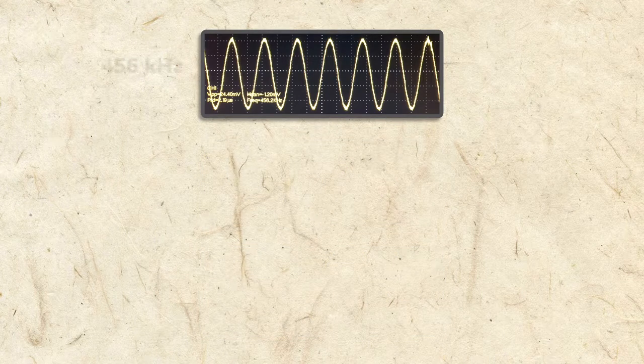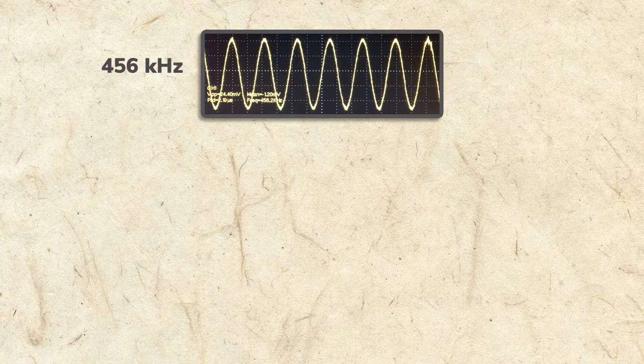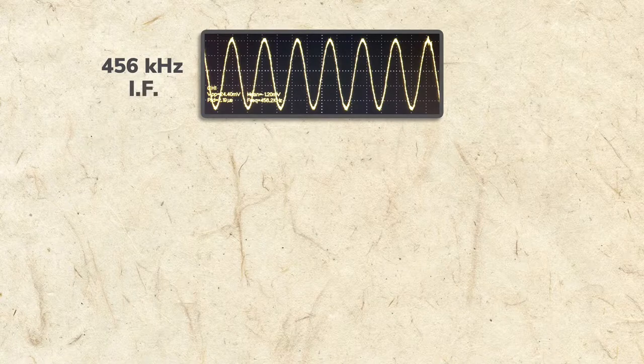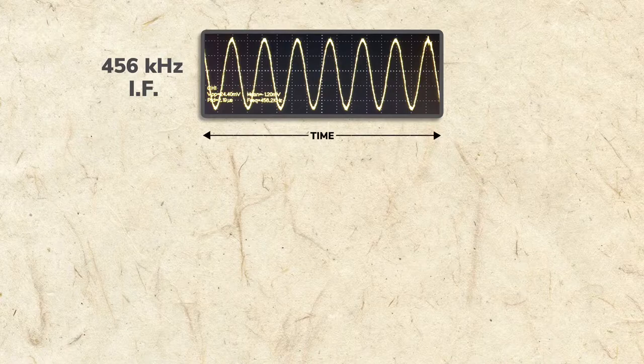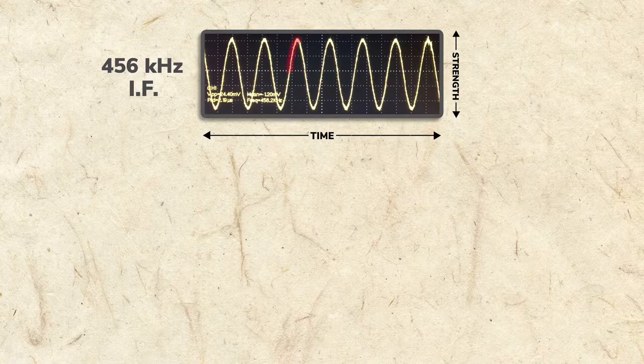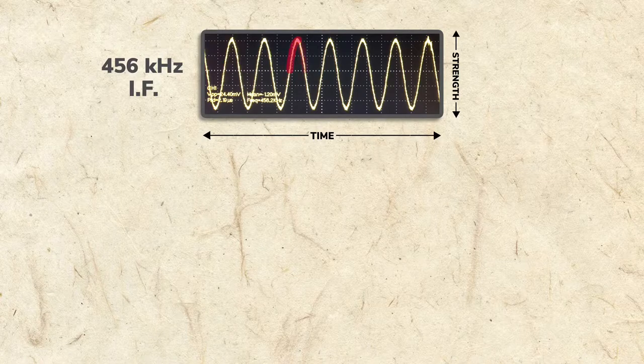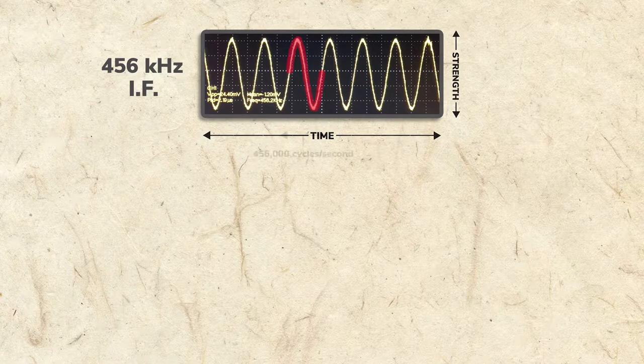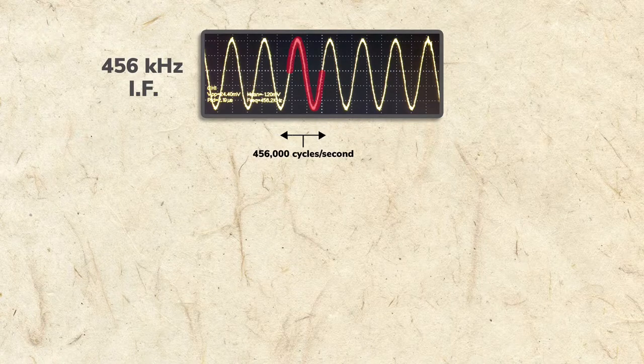On the top display, I've input a 456 kHz signal into my oscilloscope, the same frequency as the IF. The x-axis represents time, and the y-axis represents signal strength. Our signal goes from 0 to positive, back to 0, to negative, and back to 0, 456,000 times a second.